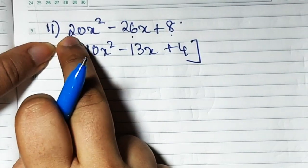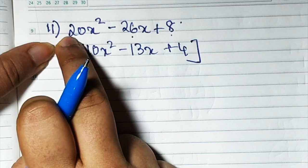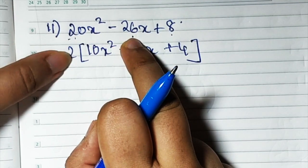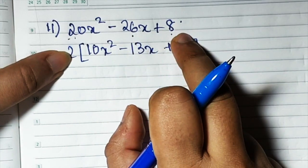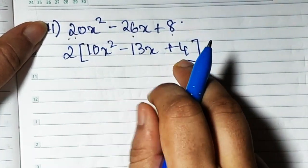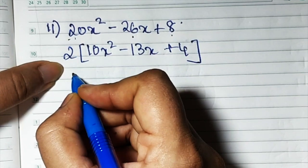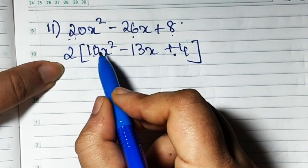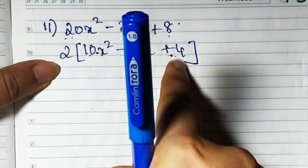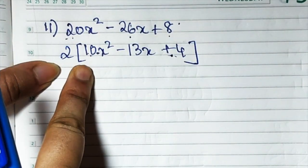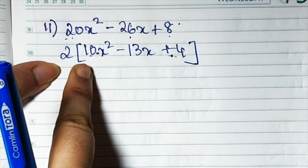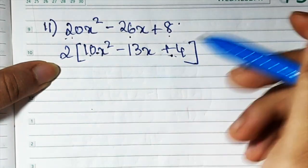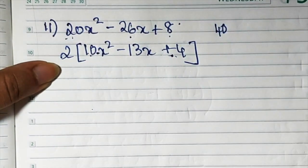Now how did I get this 10? It's 2 into 10, so 2 has gone out and 10 remains. 13 into 2 — 2 has gone out, 13 remains. 4 into 2 — 2 has gone out, 4 remains. Now break this. 2 remains out as it is. So 10 times 4 is 40. First and last you multiply. 10 fours are 40. I have to break 40 — I don't have to break 4 because here the first term has a coefficient. So I multiply with the last term and break it. Break 40.